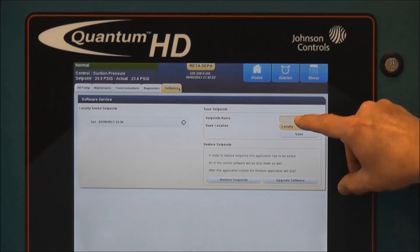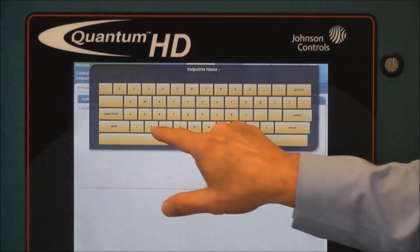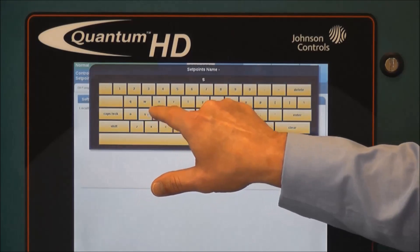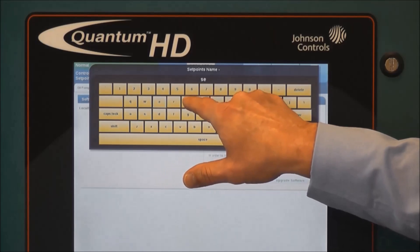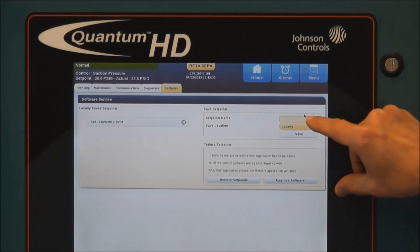The first thing we need to do is give the setpoints file a name by touching in the field for the setpoints file name and entering in a name for the setpoints file. For our purposes, we will just use the word 'set' and then press enter. And you'll see 'set' now shows up as the name for the setpoints file.